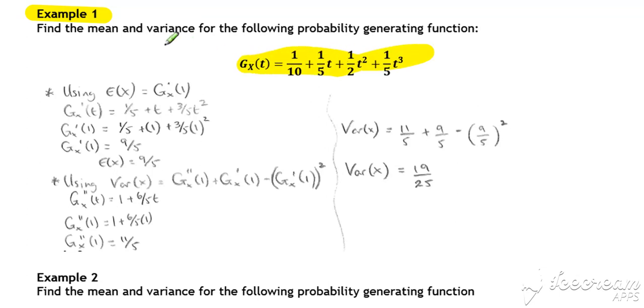The question asks for the mean and the variance. For the mean, the expected value is the differential of our probability generating function with t substituted in as one, so g'(1). If we differentiate to start off with and then substitute one in and then simplify and evaluate, we get our expected value for x.